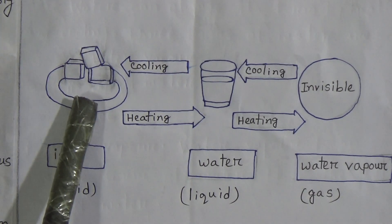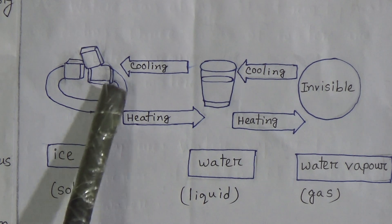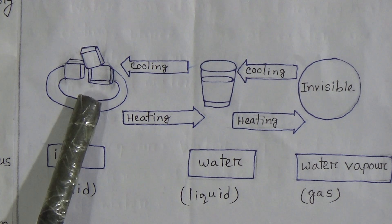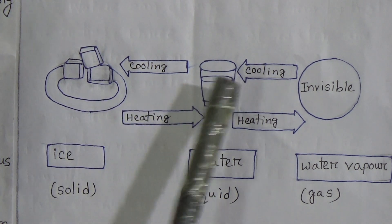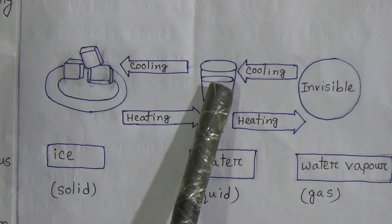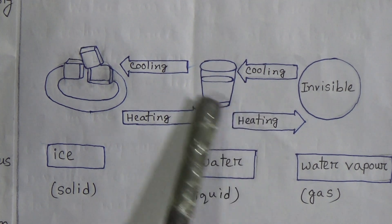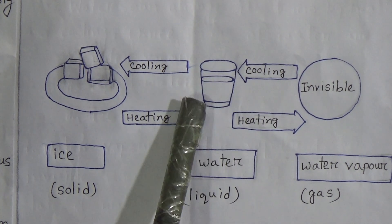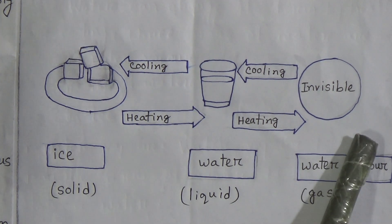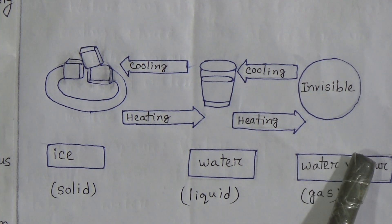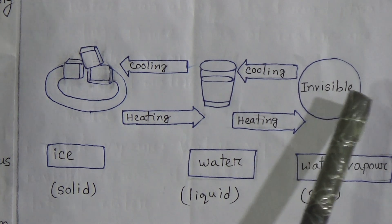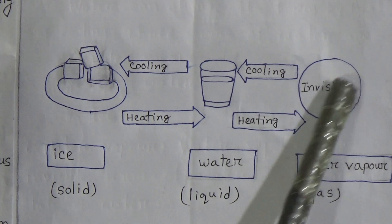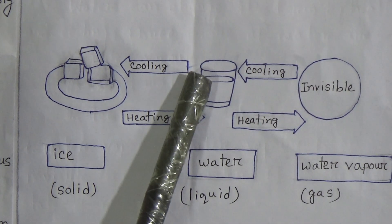When we apply heat to ice, it is converted into liquid water. When we add heat again to this liquid water, it turns into water vapor, which is the gaseous state. And when we cool this gas, it is converted back into liquid water.